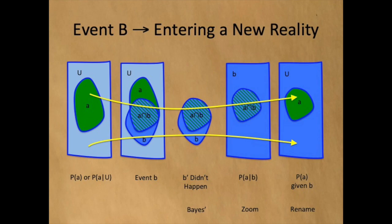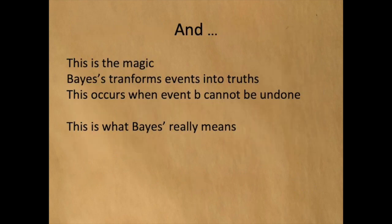Most discussions of Bayes' Law discuss the first two steps. But the last two steps are where the update happens or where the change happens. We could say that before B happened, the probability of A was one thing, and after B happened, the probability of A was something else. So event B exposes a new reality. Bayes' Law calculates precisely how our understanding of the reality A changes based on the event B. This case of entering a new reality is where the magic of Bayes' happens — because we can use it to transform knowledge about events into improved estimates of something. For example, a series of tests into a better understanding of whether I have cancer, or a series of searches into a discovery of lost treasure. Bayes' brings us closer to the truth. I might be able to ignore the event, but I cannot undo the event. This is what Bayes' really means.